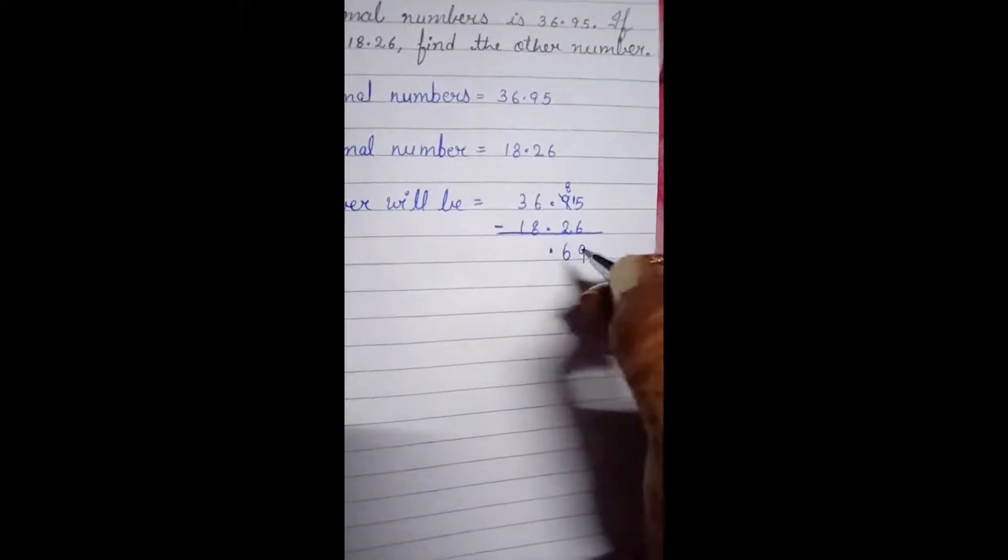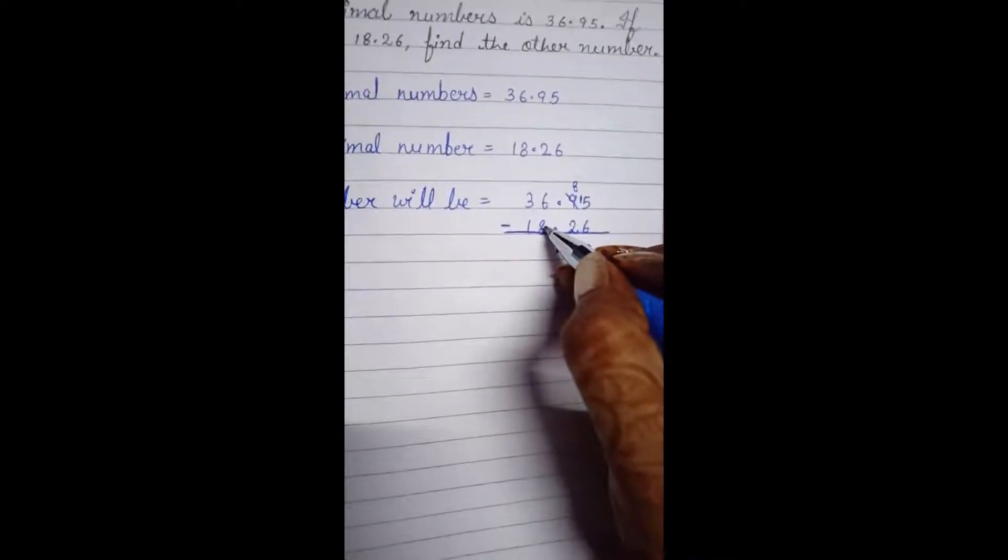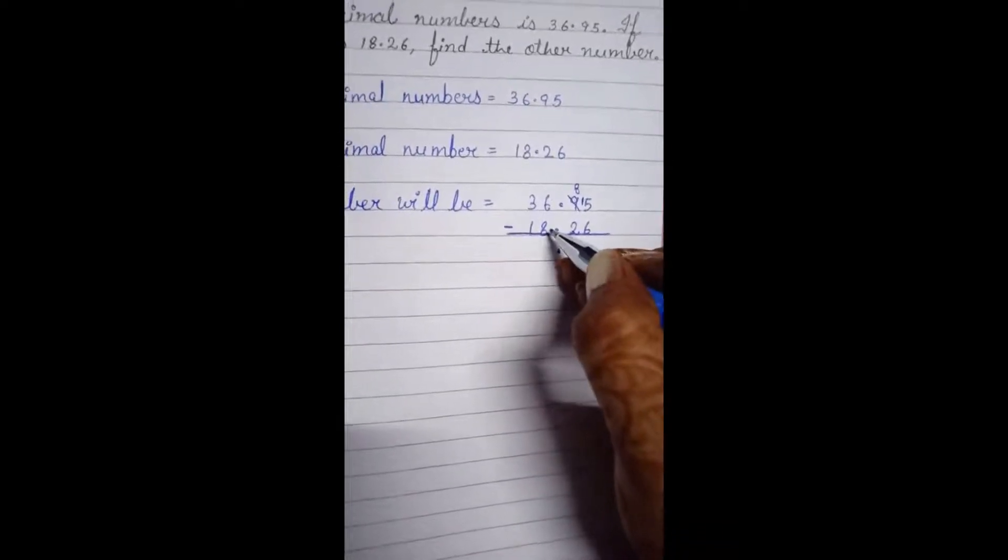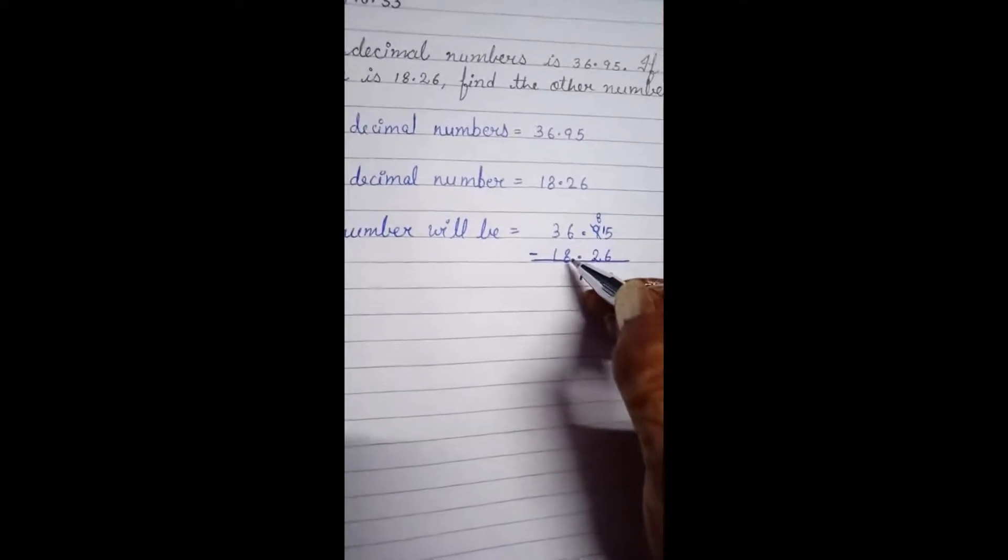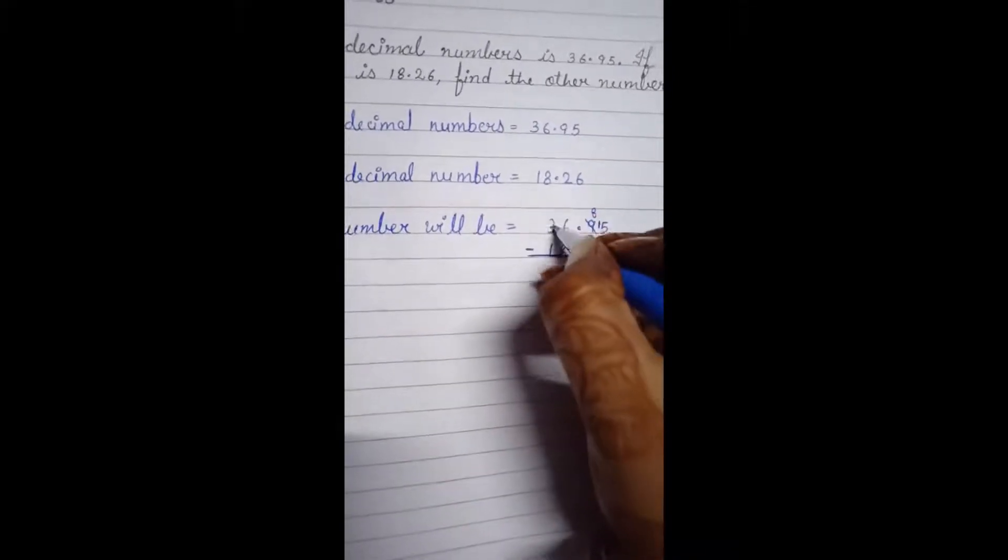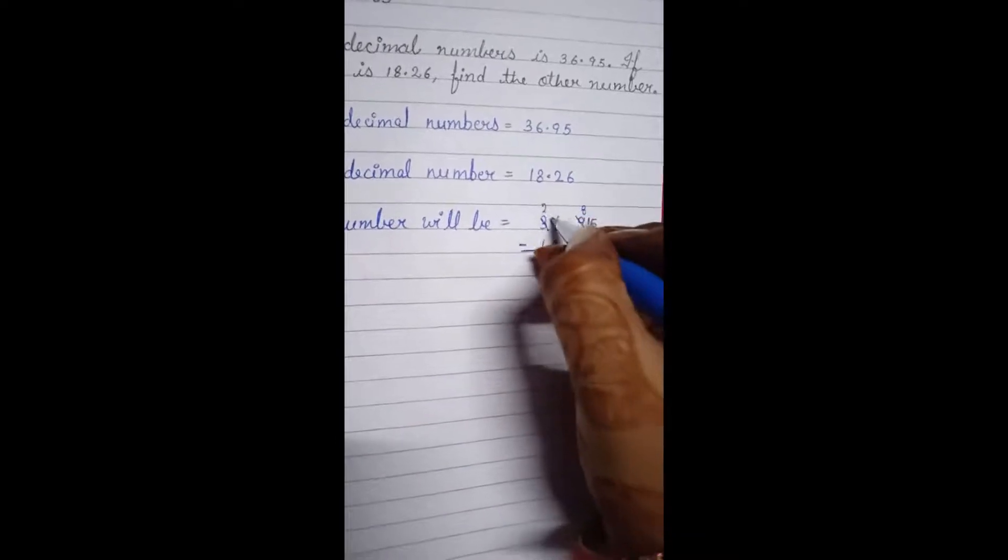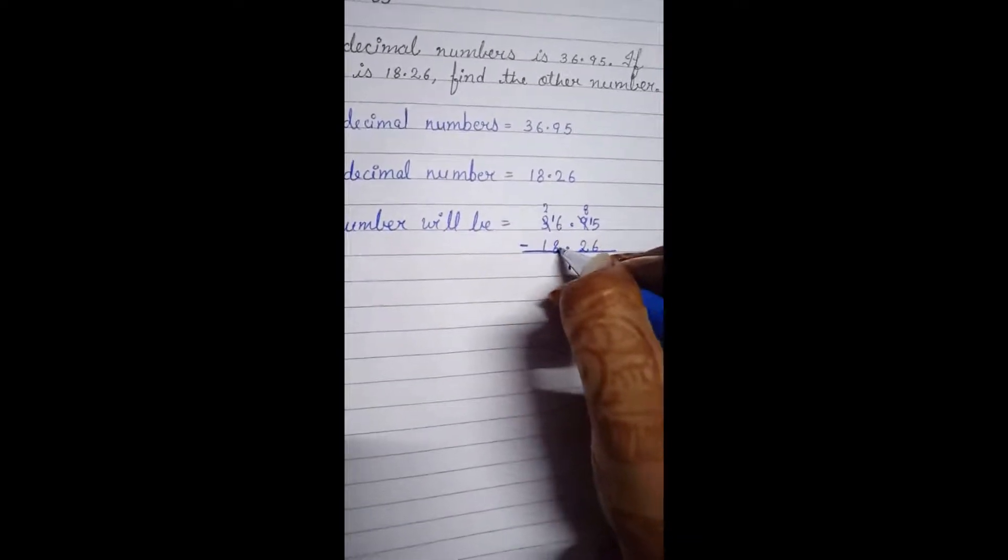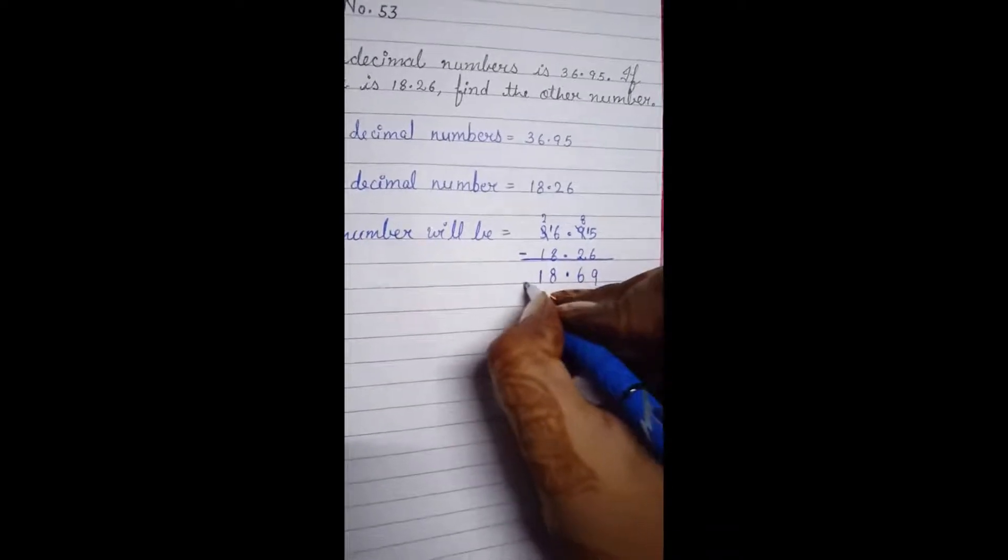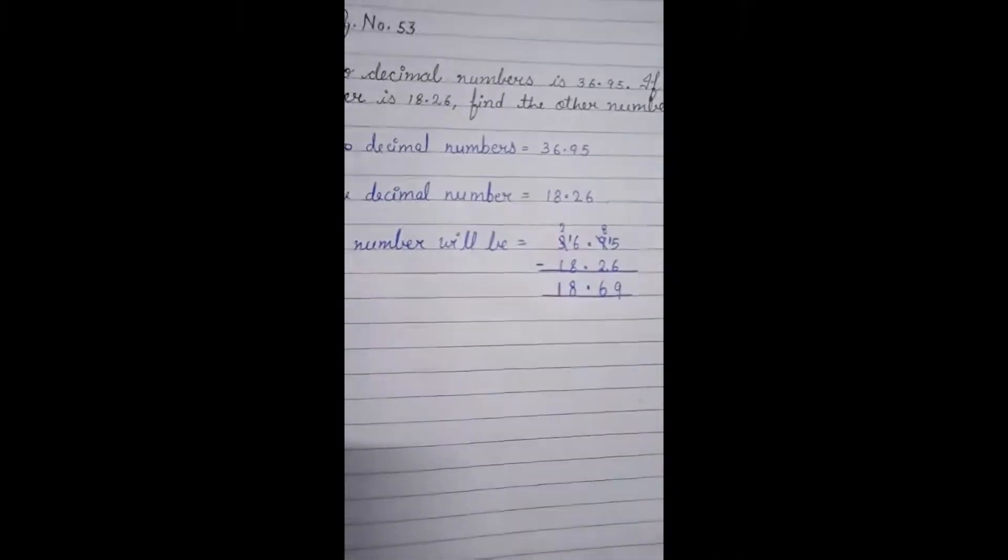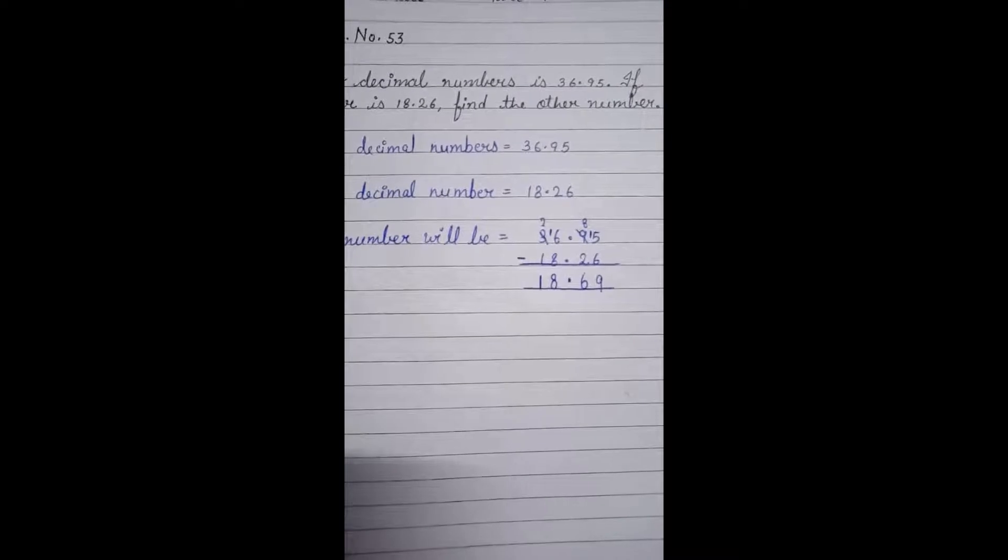We have to subtract 8 from 6. We all know that 8 cannot be subtracted from 6 because 8 is greater than 6. So we have to take borrow over here. Now 16 minus 8 is 8 and 2 minus 1 is 1. So our answer is 18.69.